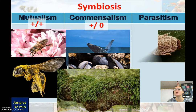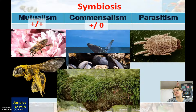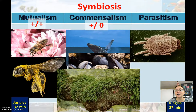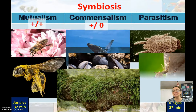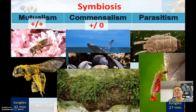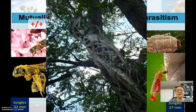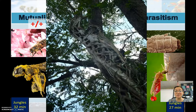In parasitism, one species benefits and one is harmed. A tick sucking blood from an organism, or a mosquito, is a parasite. Here's a picture from Belize showing a strangler fig.